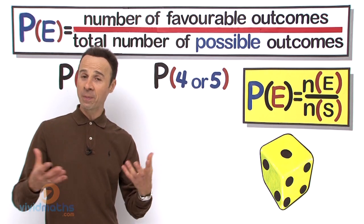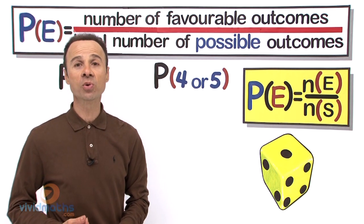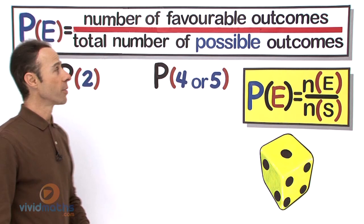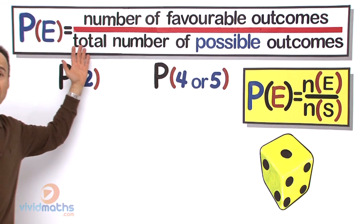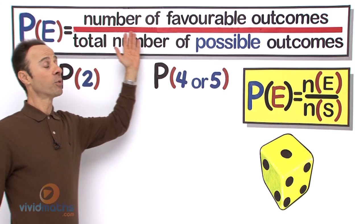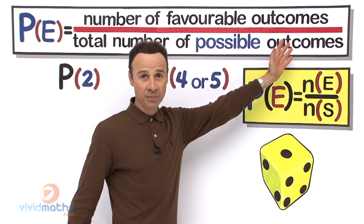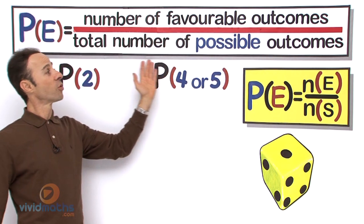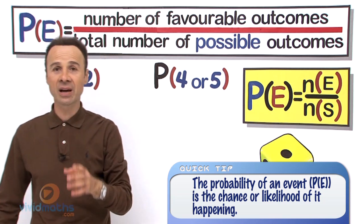But for the sake of probability, most often and most textbooks prefer to use the word event. So the probability of an event equals on the top the number of favorable outcomes over the number of possible outcomes. So what does that mean exactly?